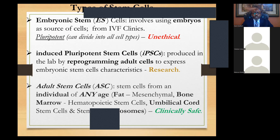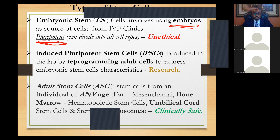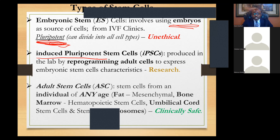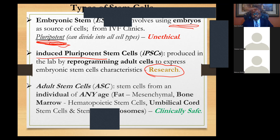There are three major types of stem cells. Embryonic stem cells — the most powerful, with pluripotent characteristics, but considered unethical because they are obtained from IVF clinics and involve potential human beings, so religious groups and some countries are against them. Because of that pluripotent power, scientists created induced pluripotent stem cells — taking mature cells like skin or white blood cells and reprogramming them to have the same power as embryonic stem cells without the ethical issue. Some are already in clinical trials; others are in pre-clinical research.